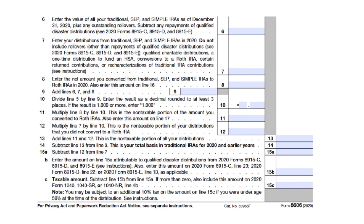For Line 15B: if all your distributions are qualified disaster distributions, enter the amount from Line 15A on Line 15B. If you have distributions unrelated to qualified disasters as well as qualified disaster distributions, multiply the amount on Line 15A by a fraction — the numerator is your total qualified disaster distributions and the denominator is the amount from Form 8606, Line 7. For Line 15C: if you were under age 59½ at the time you received distributions from your traditional SEP or SIMPLE IRA, there is generally an additional 10% tax on the portion of the distribution included in income.